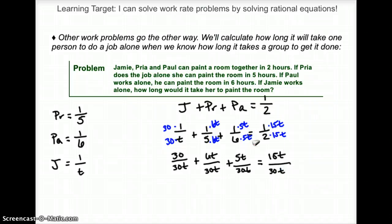So 30 over 30T plus 6T over 30T plus 5T over 30T should equal 15T over 30T.